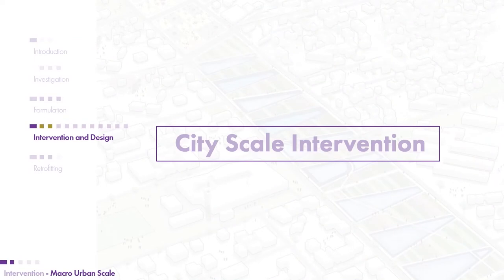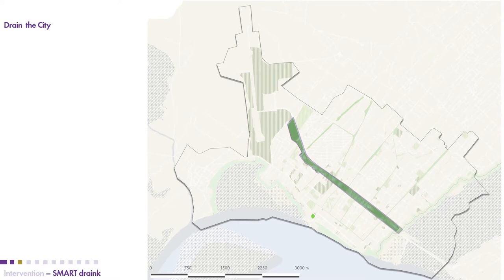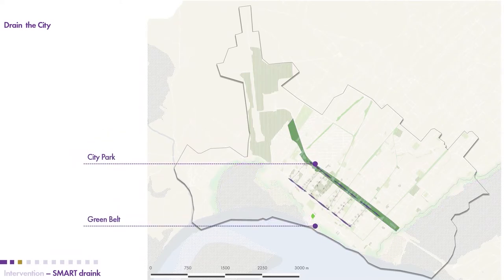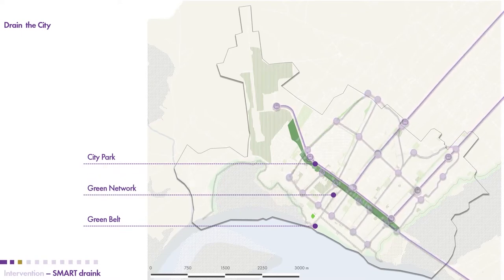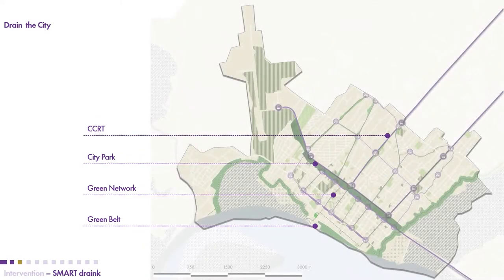The applications and formulations helped us develop interventions at different scales of the city. At the city scale, we decided to drain and link the city. This was achieved through prototype projects such as the city park, the green belt, green networks, and the chapa and cycle rapid transit system linking the city.